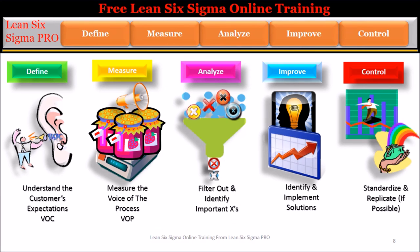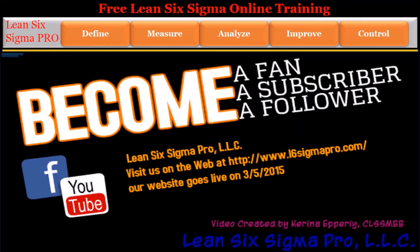The DMAIC 5-step process can be broken down into a simple statement. Define: understand the customer's expectations, the voice of the customer, VOC. Measure: measure the voice of the process, VOP. Analyze: filter out and identify the important X's (inputs). Improve: identify and implement solutions at the gemba. Control: standardize and replicate the improvement.